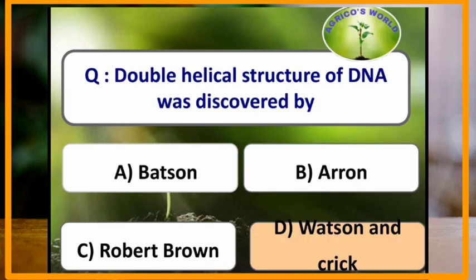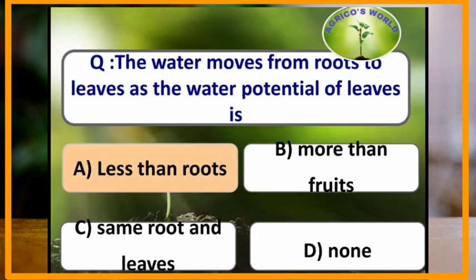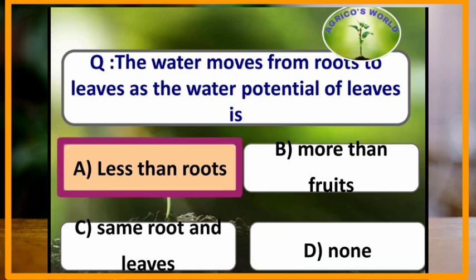Double helical structure of DNA was discovered by which scientist? Double helical structure of DNA was discovered by Watson and Crick. Water moves from roots to leaves as the water potential of the leaves is less than that of the roots.